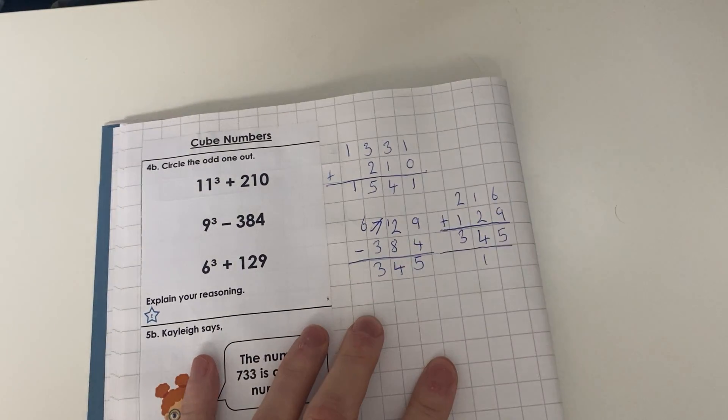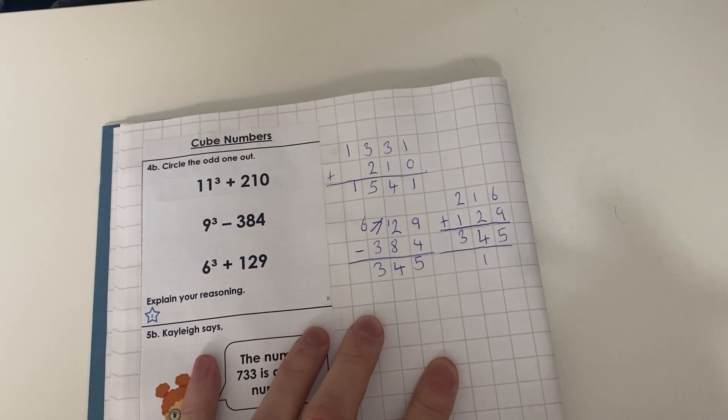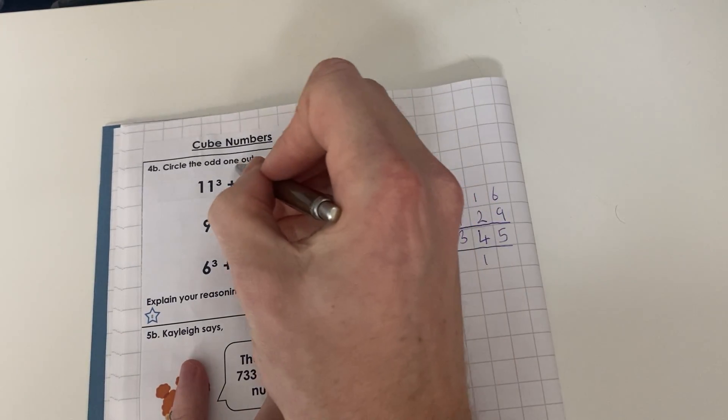Which was the odd one out? Circle it. Well it's pretty clear that this one is the odd one out.